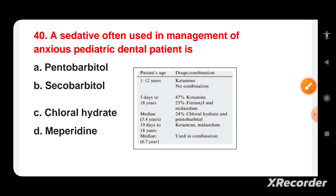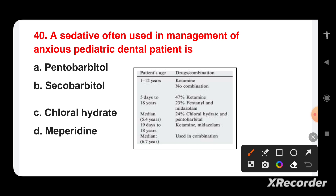A sedative often used in the management of anxious pediatric dental patients is which of the following? Options are: pentobarbital, secobarbital, chloral hydrate, or meperidine. For patients aged 1 to 12 years, ketamine combinations may be used, and chloral hydrate is used in approximately 24% of cases. Chloral hydrate is a commonly used sedative in pediatric dental patients.